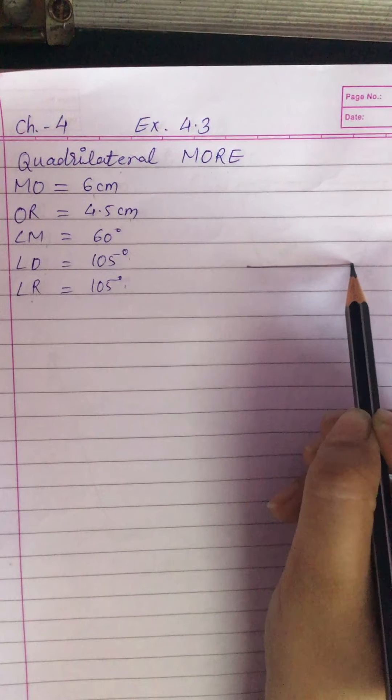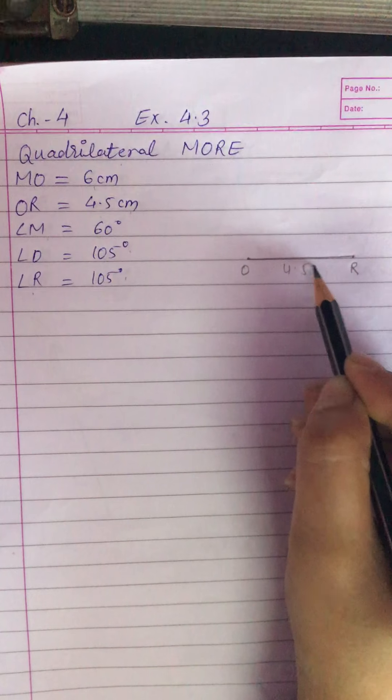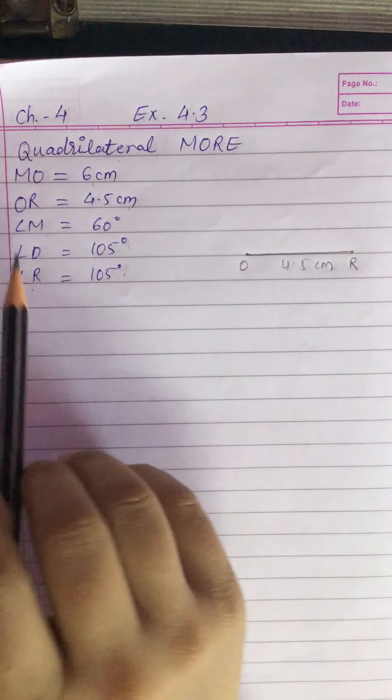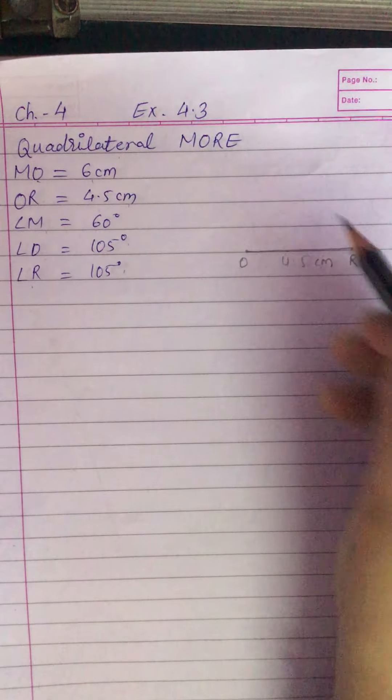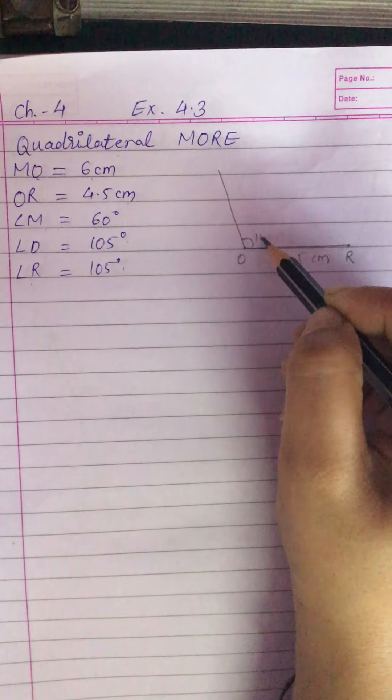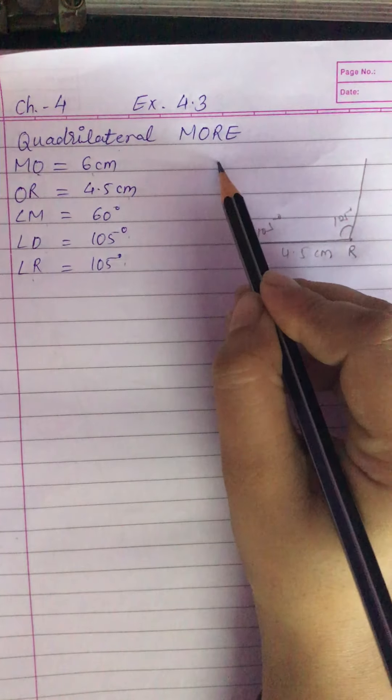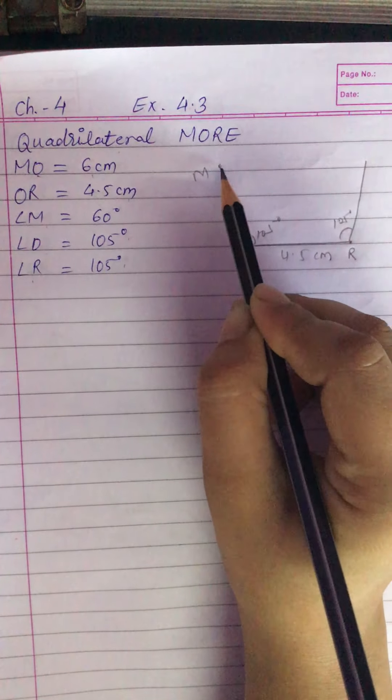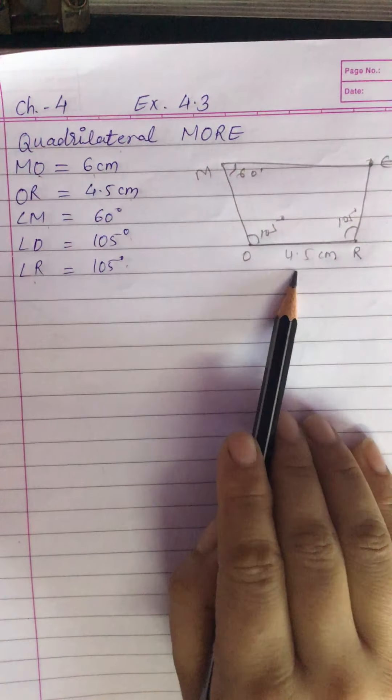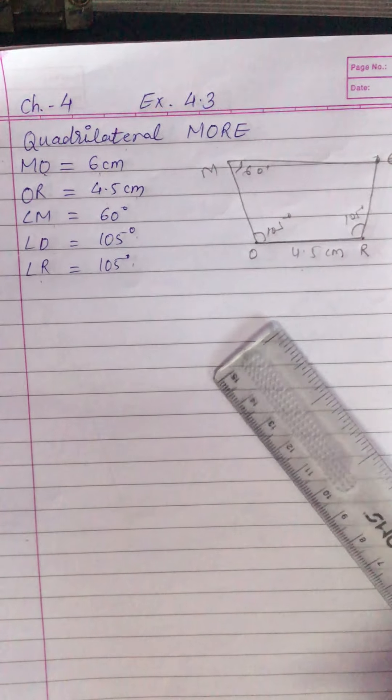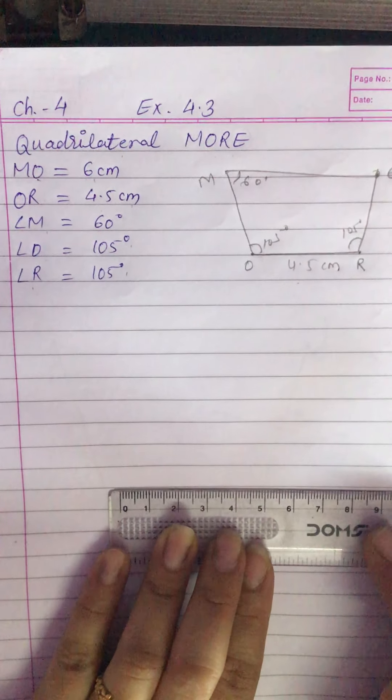OR is a base of the quadrilateral which is 4.5 cm. We can also take base MO, but here I am taking OR. At O it is 105 degrees, at R also 105 degrees, then point M at 60 degrees, and point E. With the help of the rough figure, first we have to draw a line segment OR which is 4.5 cm.